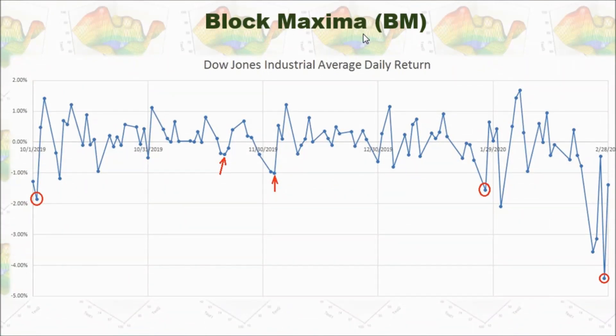Block maximum works this way. I only show five months the daily return of Dow Jones index in order to show you the concept. But for every month, I will consider as one block. And then I will pick up the minimum return from every month.